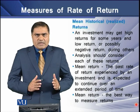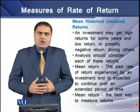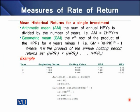Mean or average returns are the best way to measure returns on a particular investment. We can compute historical returns for a single investment or a portfolio. For a single investment's mean historical return, we can use arithmetic mean or geometric mean. The arithmetic mean is the sum of annual holding period yields divided by the number of years — total holding period yields divided by n gives the average holding period yield.